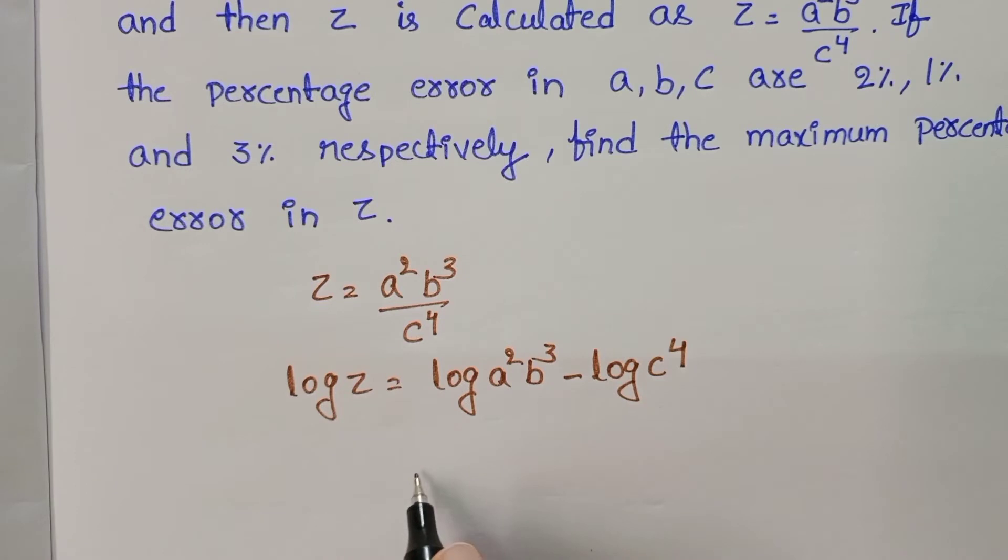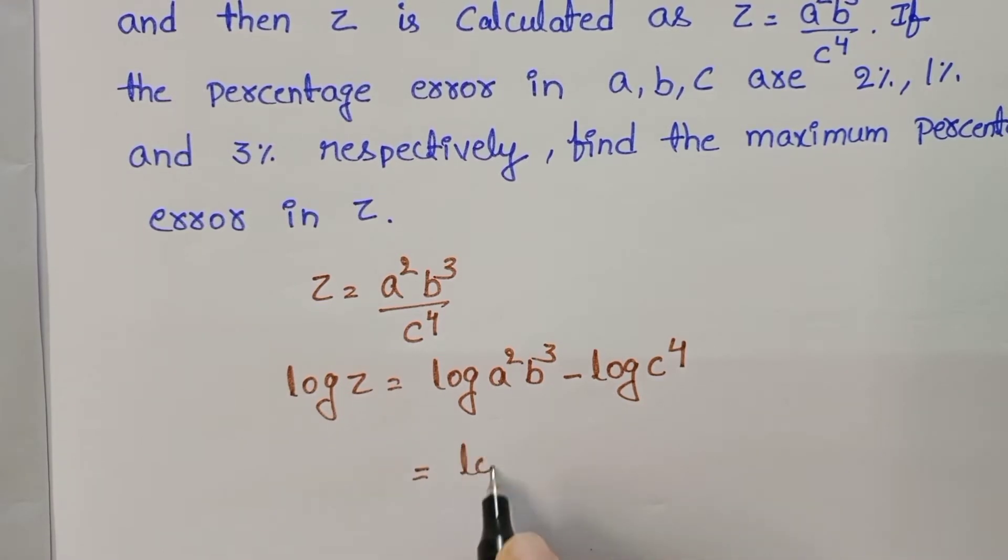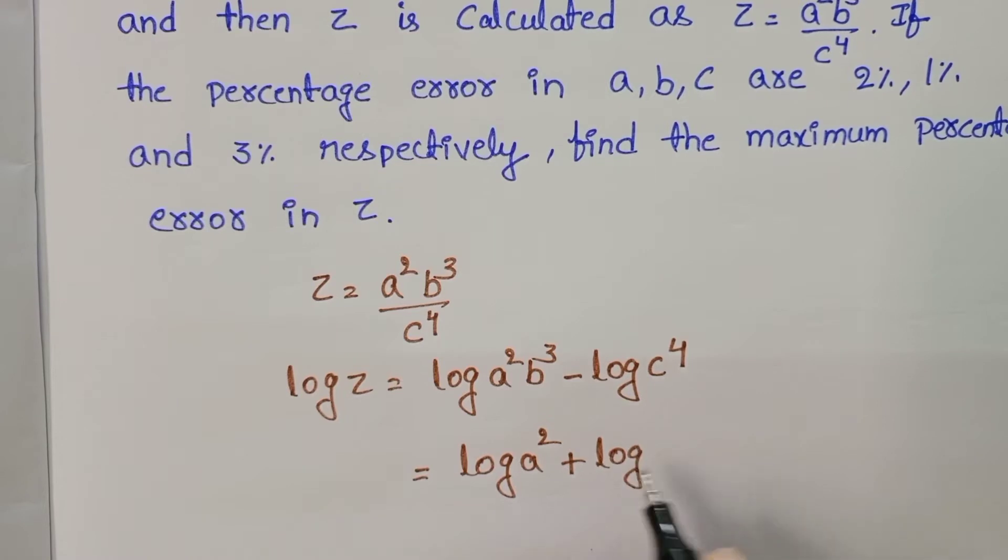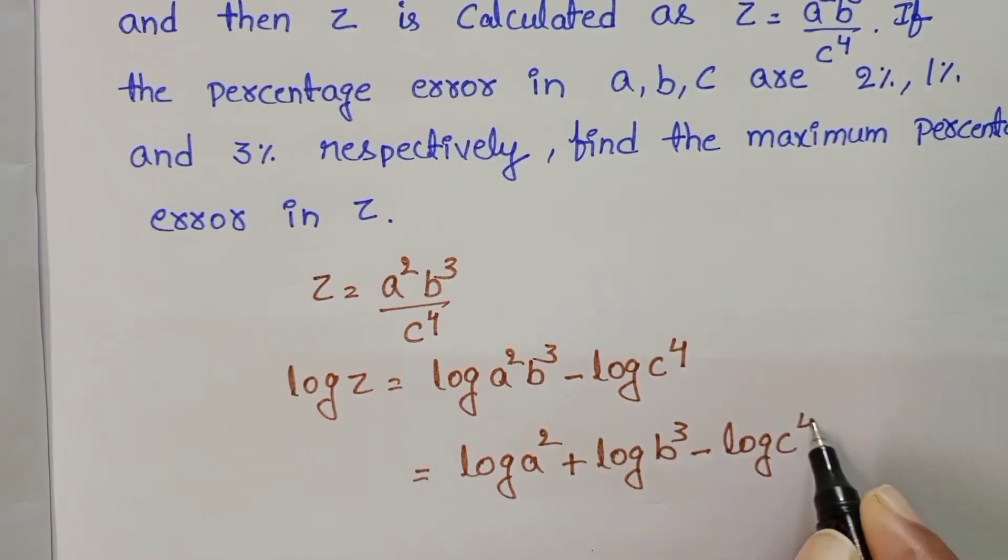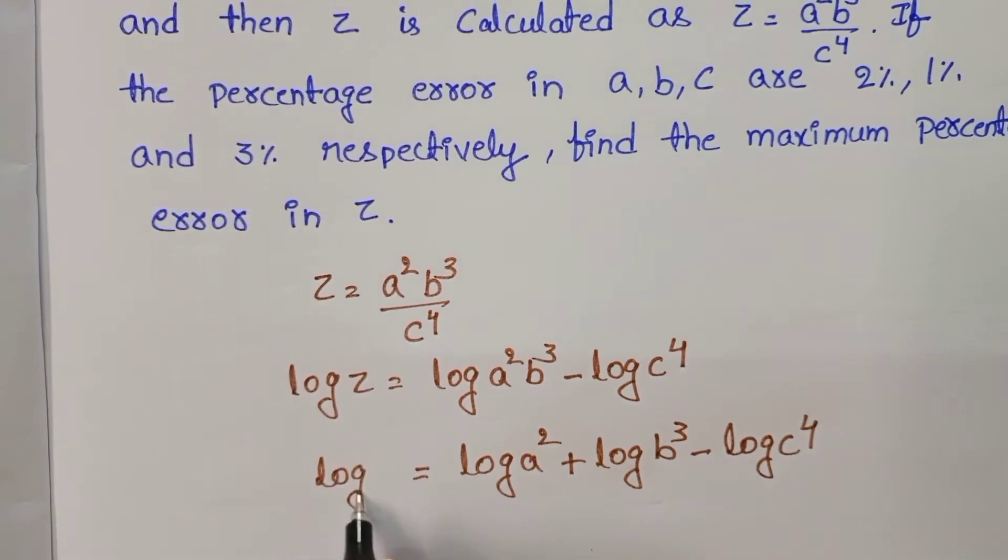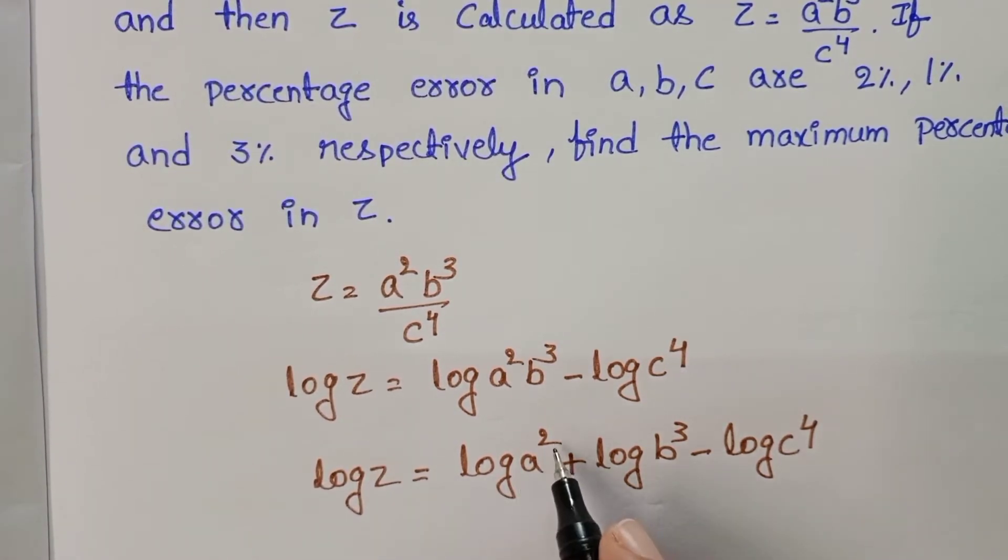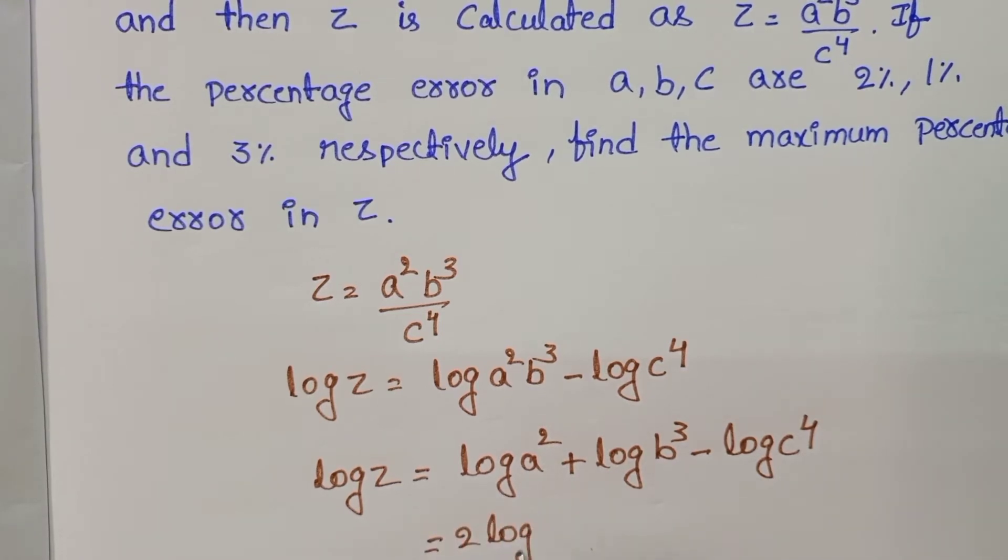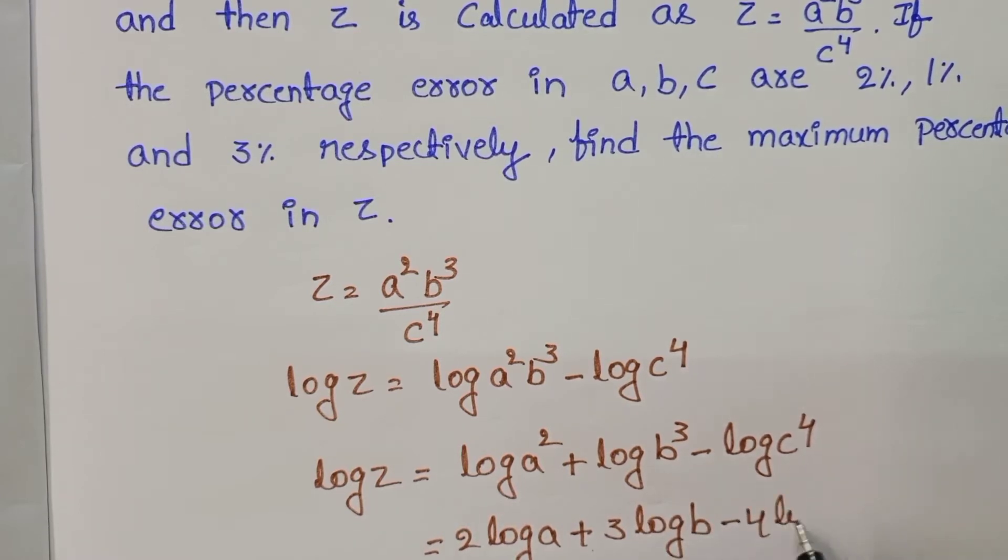Using log AB equals log A plus log B, we get log A square plus log B cube minus log C power 4. This is log X power M form, which is M log X. So we have 2 log A plus 3 log B minus 4 log C.